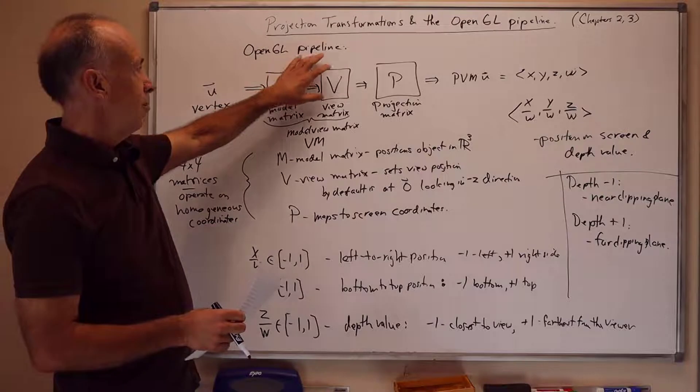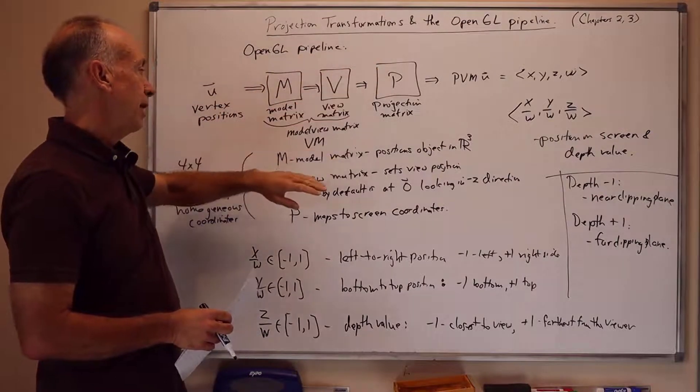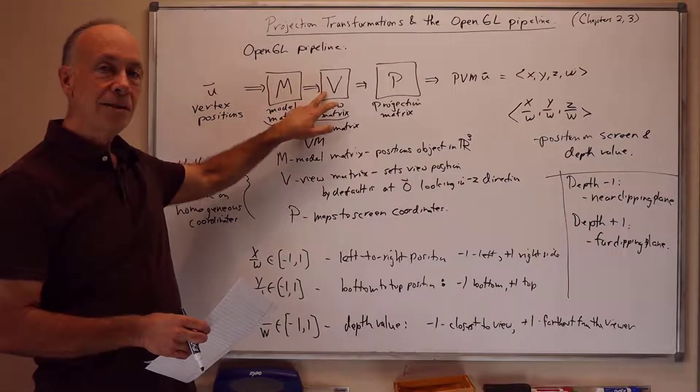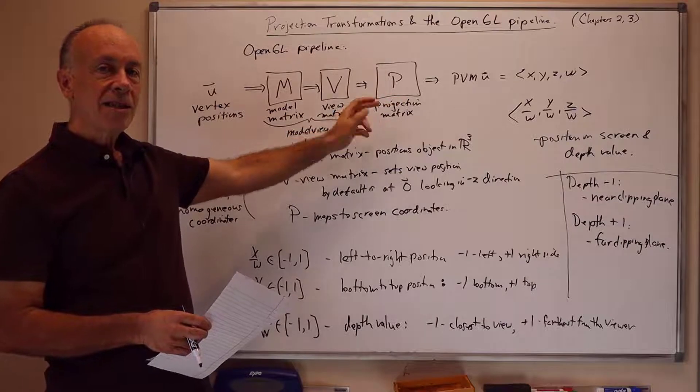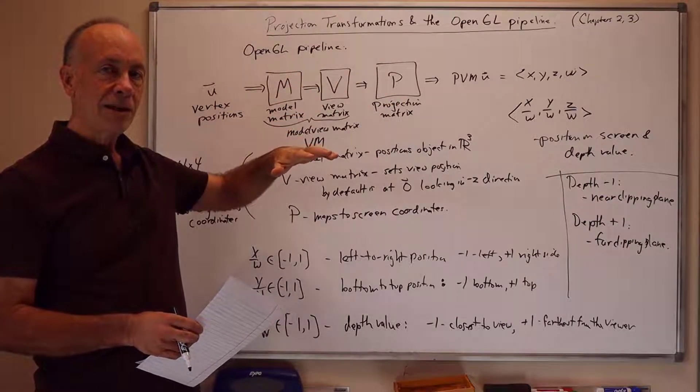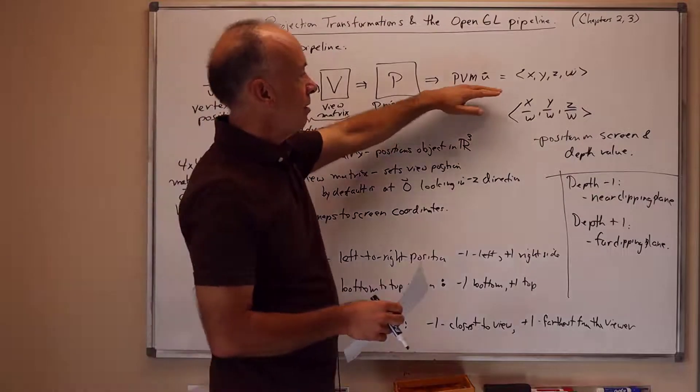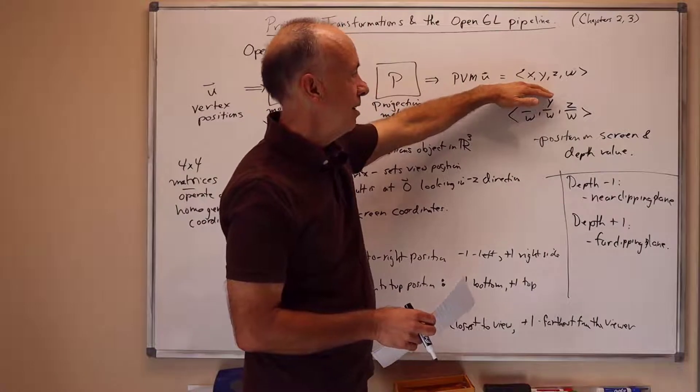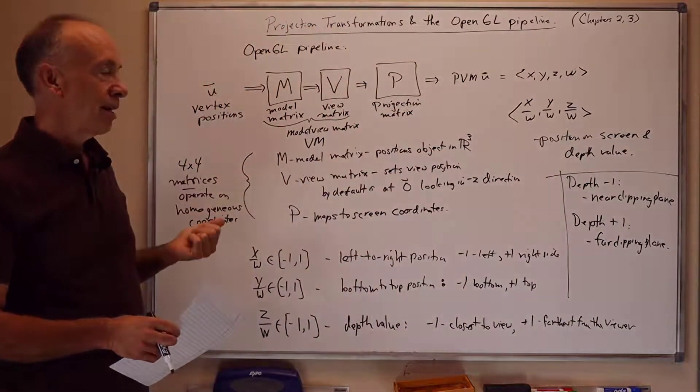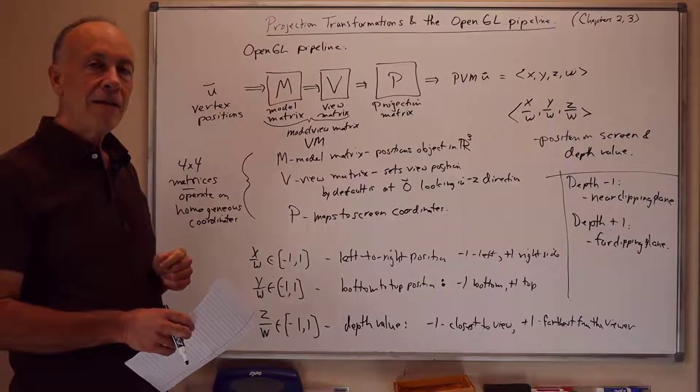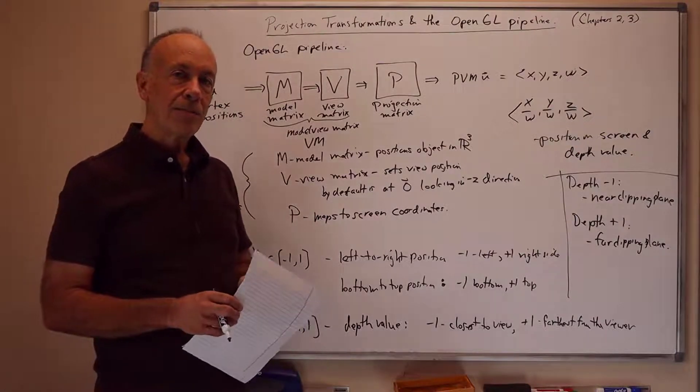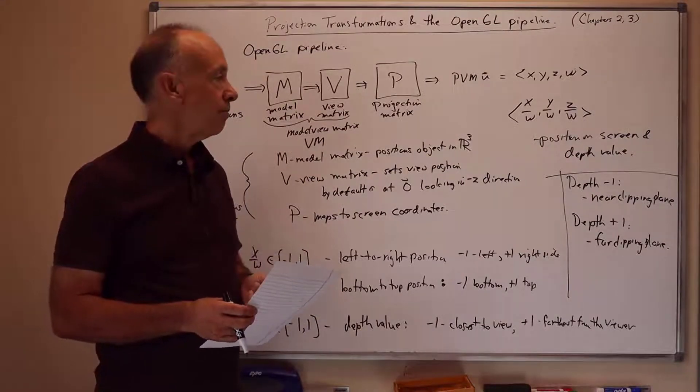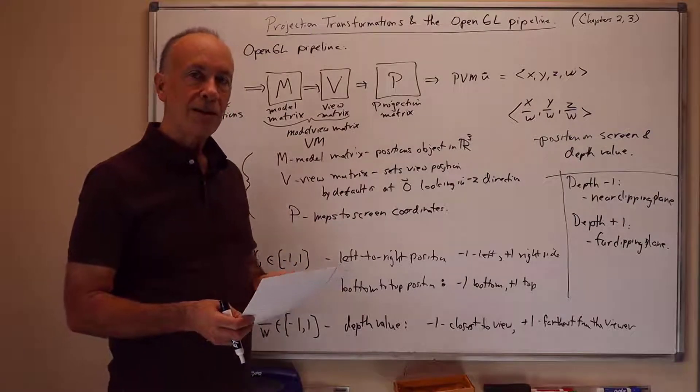So these computations in the OpenGL pipeline typically happen in the following way. The C++ program defines the matrices M, possibly V, and P, and then it sends them to the vertex shader. The vertex shader will do this final computation of multiplying by matrices and compute these x, y, z, w values. The vertex shader then sends those x, y, z, w's back to the OpenGL pipeline. The OpenGL pipeline maps those things to pixels on the screen and then calls the fragment shader for every pixel and whatever is being rendered. And I'll show a little more detailed picture of that on the next board.